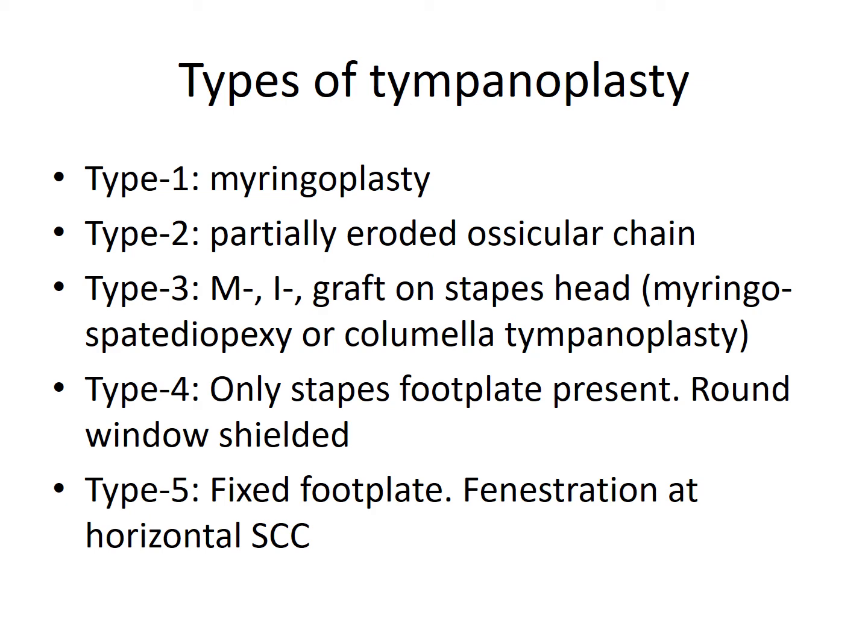In Type 5 Tympanoplasty, Malleus is absent, Incus is absent, Stapes superstructure is absent, Stapes Footplate is present but it is fixed — so it is not functional. Therefore a separate third window is created, most commonly in the Horizontal Semicircular Canal, and the graft material is kept over that window, which now acts as the Oval Window — this is the Fenestration Operation. There is also one more term called Sono Inversion, sometimes called Type 6 Tympanoplasty, in which the graft is placed over the Round Window so the function of the Round Window is done by the Oval Window and vice versa — but it is not a routinely common procedure, just theoretical.